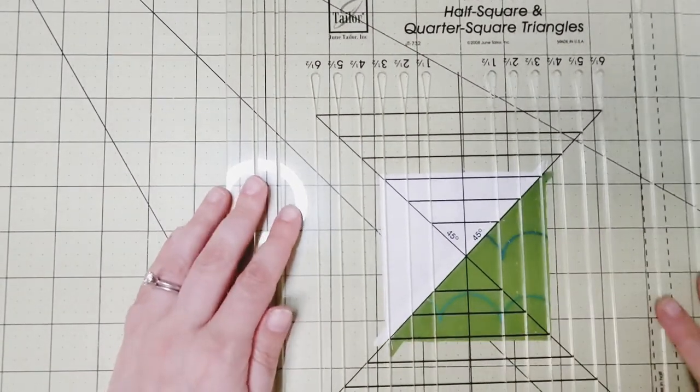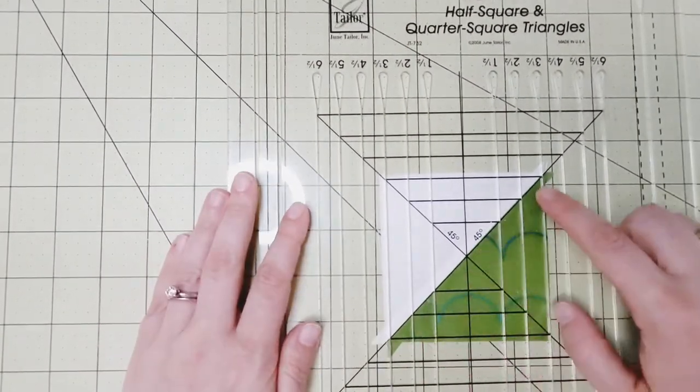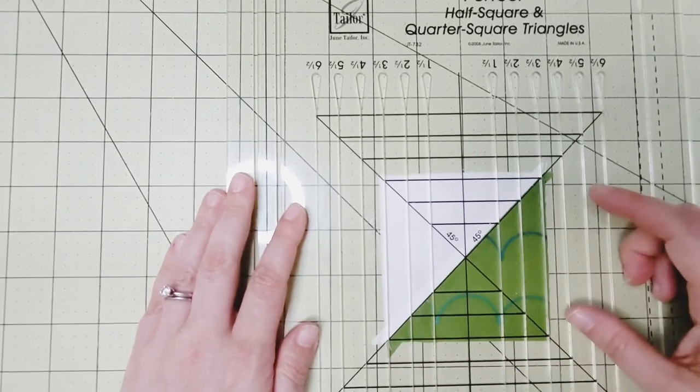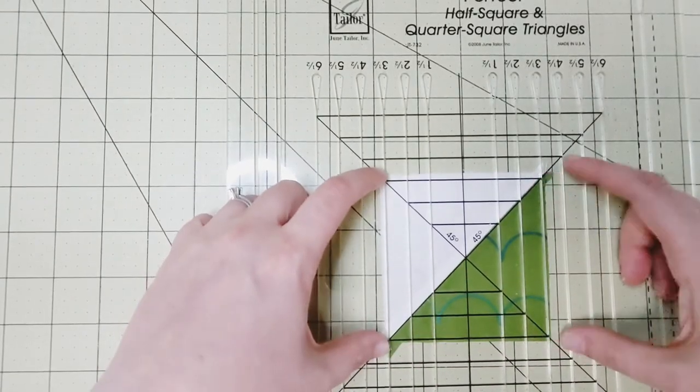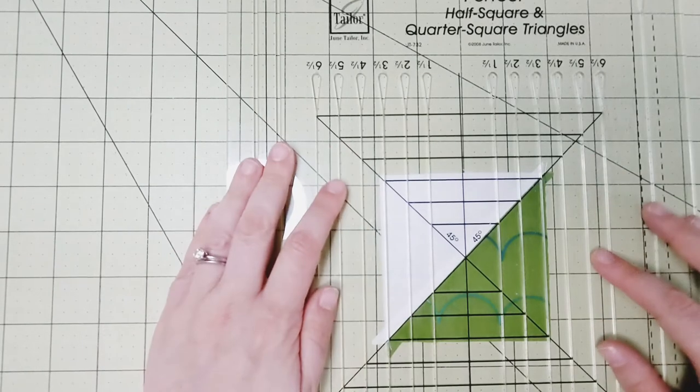I'll go through one more so you can see it again. All right, so I'm going to line up the diagonal where my two fabrics meet. I'm going to make sure that all four corners are covered by fabric. This one's looking pretty good.